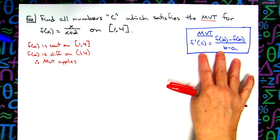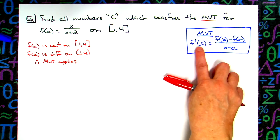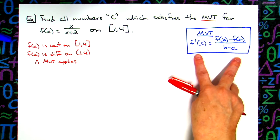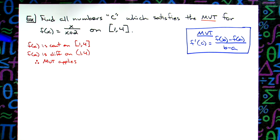Now basically, if you understand what the mean value theorem says, we've got to calculate the derivative, we've got to calculate the average rate of change, and then we have to set these two things equal. So that's the process we're going to take here. Let's go ahead and calculate that derivative.